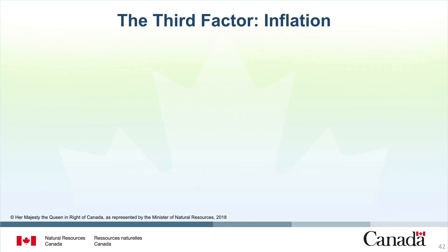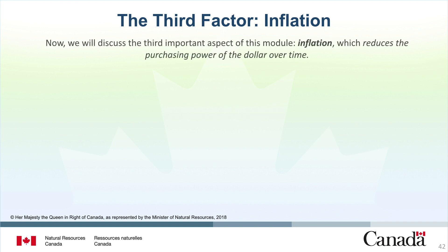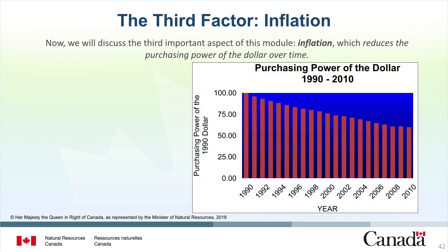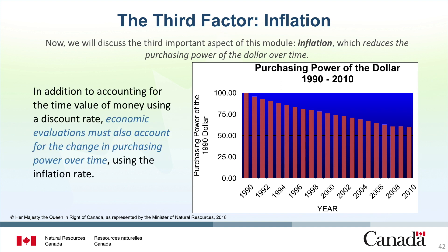So far in this module, we have discussed two important concepts: discount rates and cost conversion factors. Now we will discuss the third important aspect of this module, inflation, which reduces the purchasing power of the dollar over time. For example, $1 in 1990 has a different value than $1 in 2000. Dollars expended in different years with different purchasing power cannot be added together directly to arrive at a meaningful amount. In addition to accounting for the time value of money using a discount rate, economic evaluations must also account for the change in purchasing power over time using the inflation rate.